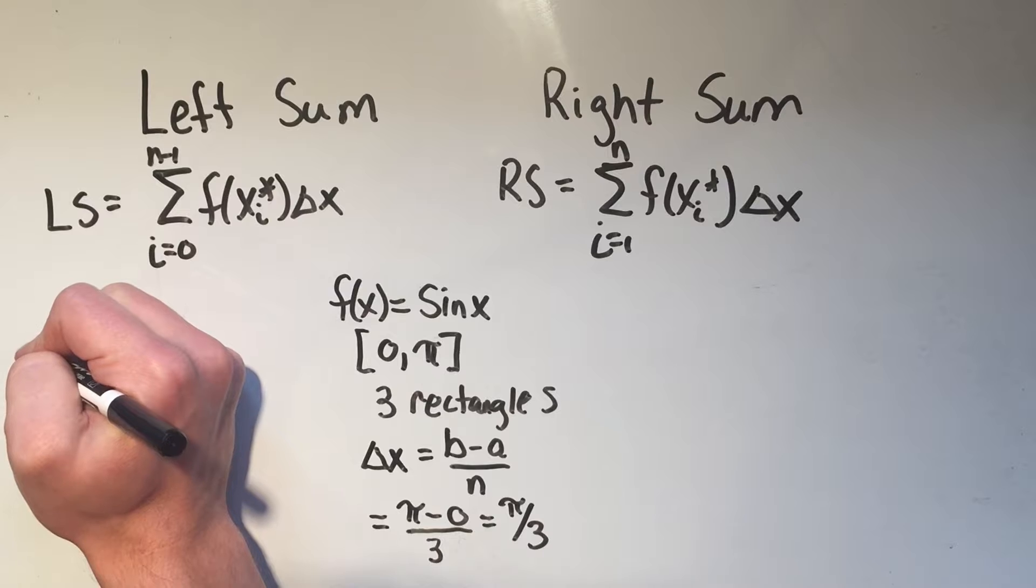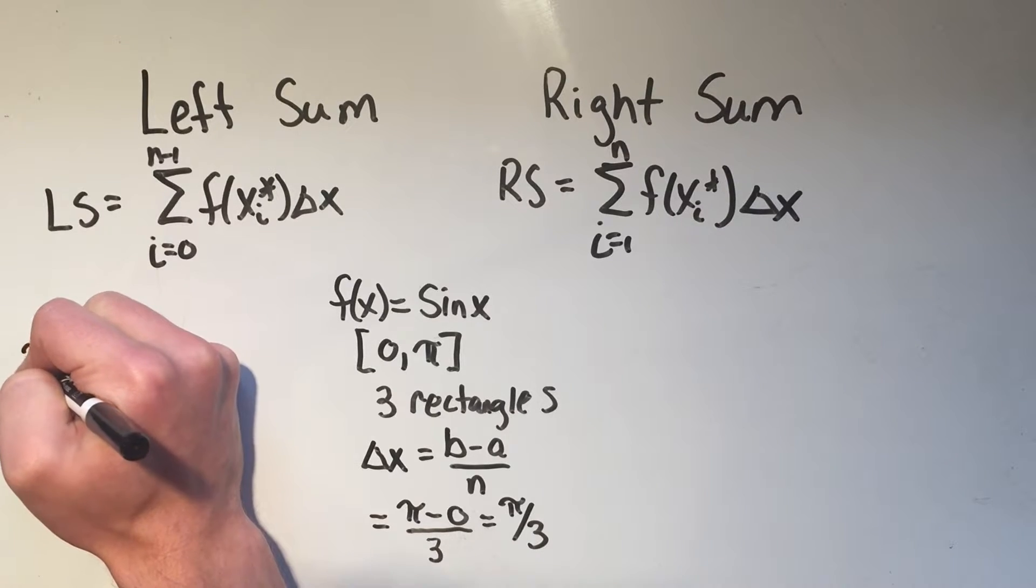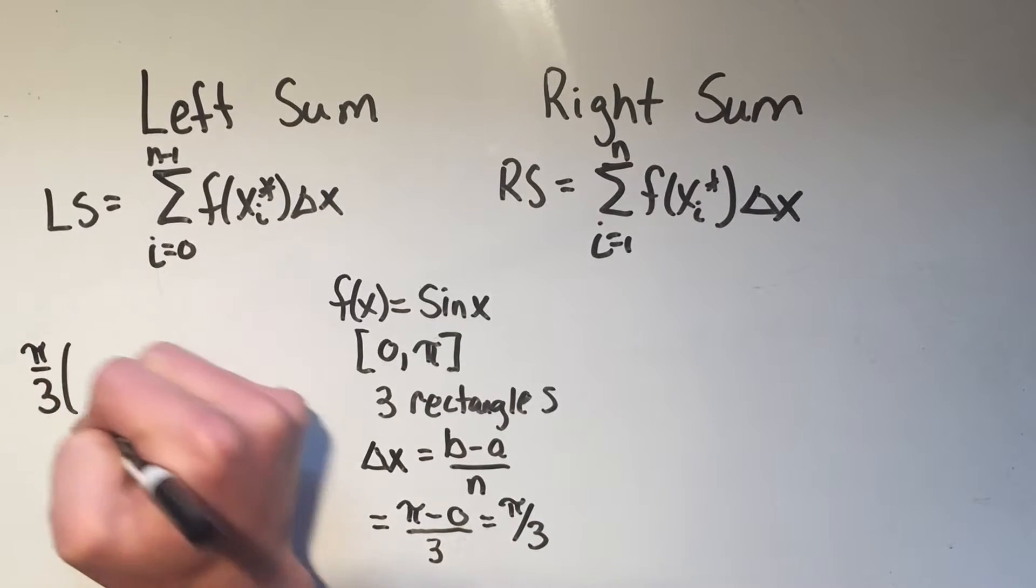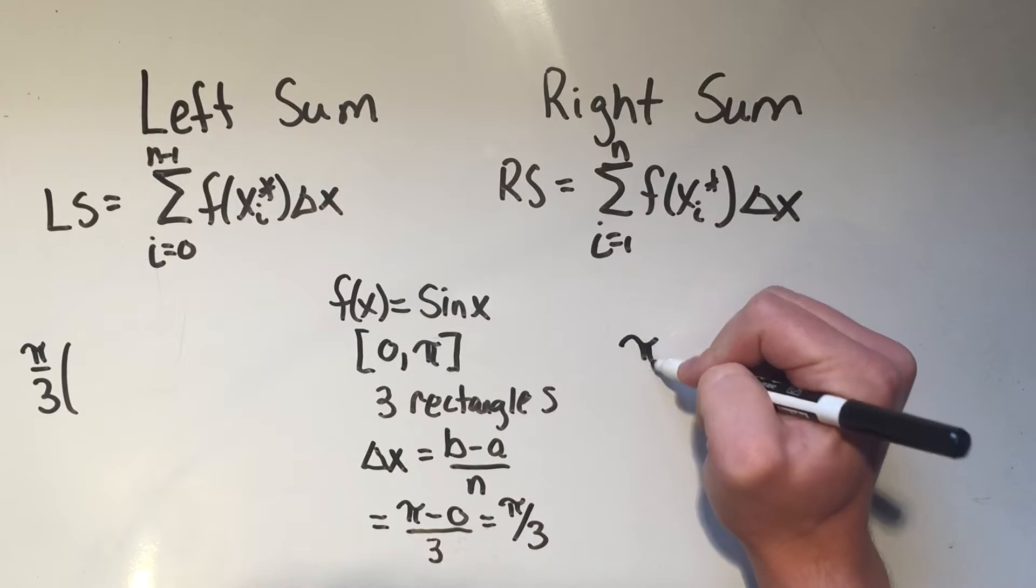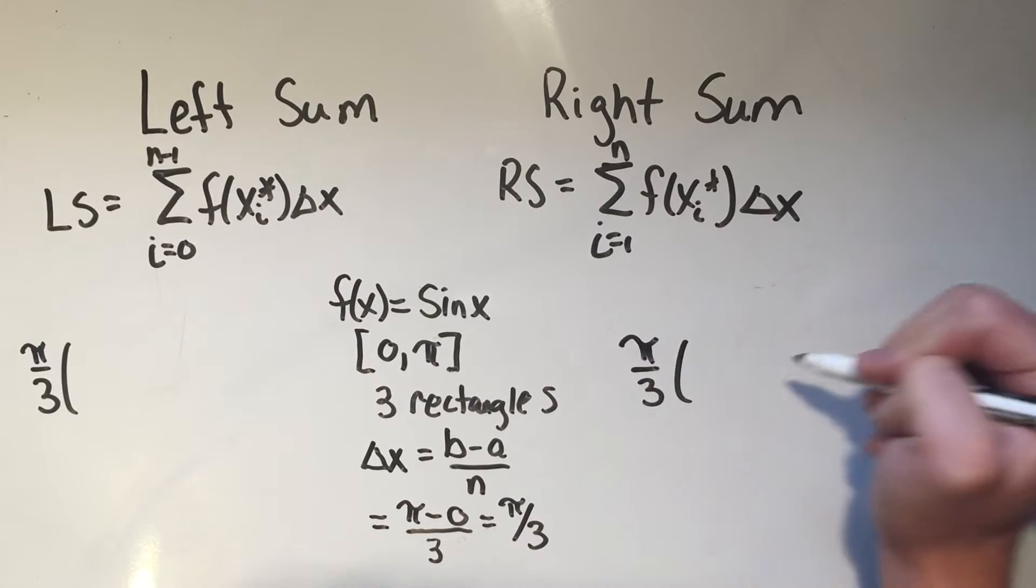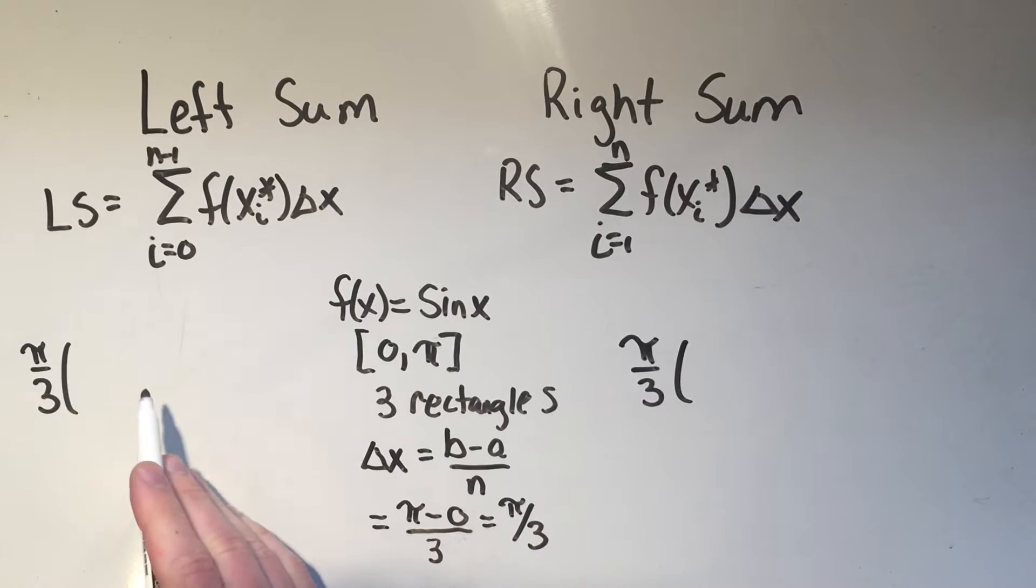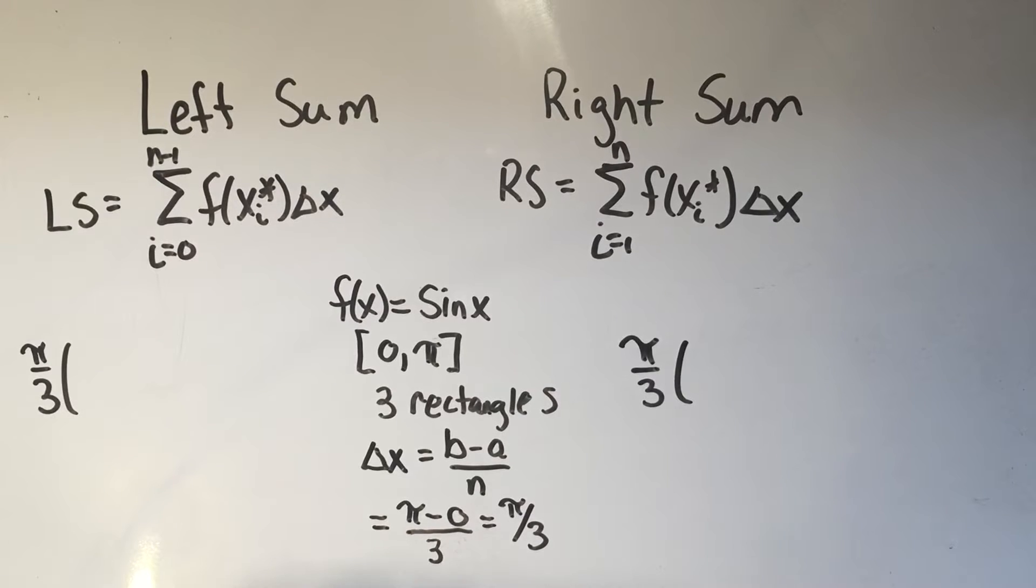So I'm going to write pi over three out front of both of these things, because it's the width of the rectangles on both of them. And now I need to add up all the heights of the rectangles. And the only difference is, where do I start? Well, for the left sum, I start at the left endpoint, which is zero.